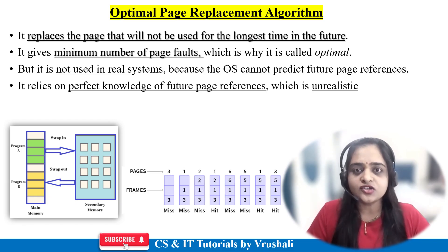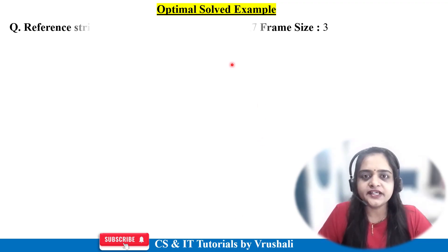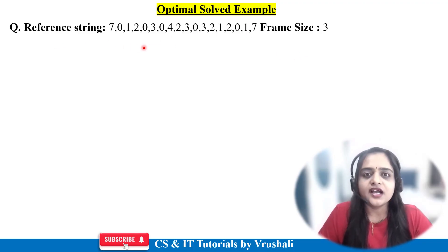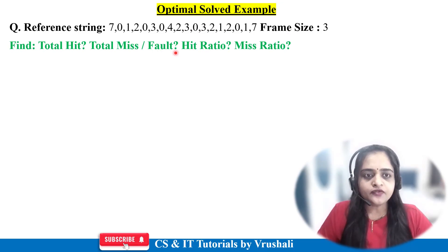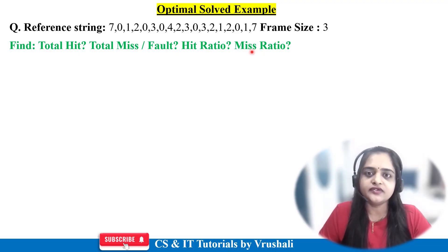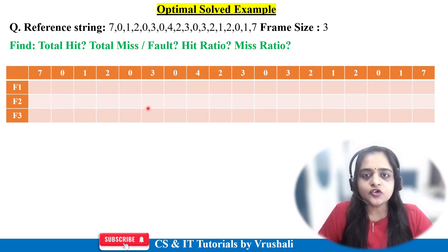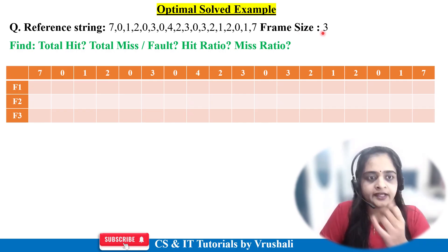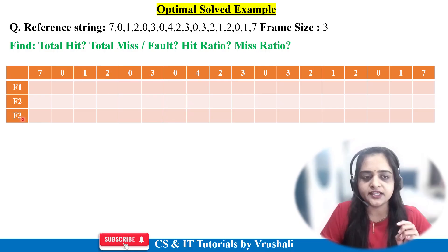Now let's understand this algorithm with a solved example. This kind of example is generally asked in university exams as well as the GATE exam. Two things are given: reference string and frame size. The reference string means the CPU is demanding all these pages one by one for execution, and frame size is equal to 3. You have to find out total hits, total faults, hit ratio, and miss ratio — this kind of question is generally asked for 6 to 8 marks. First, draw a table representing RAM in your system with 3 frames on the left side, and the reference string across the top.